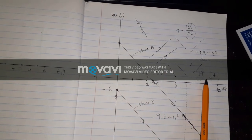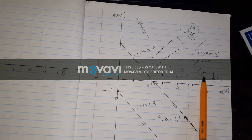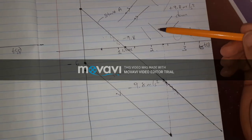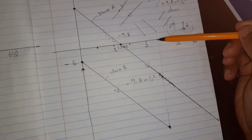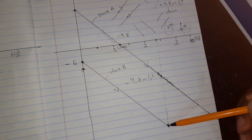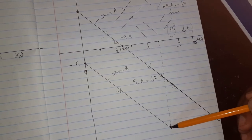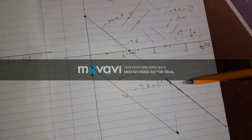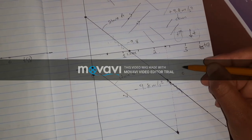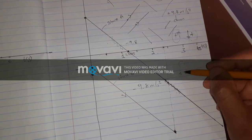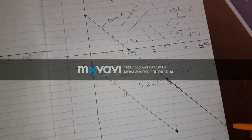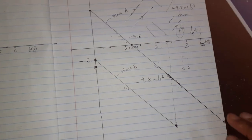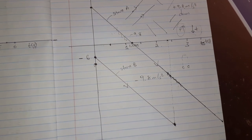One important point is that on the graph, stone B hits the ground at a specific time, and stone A is at its initial position at that same instant. That's it.